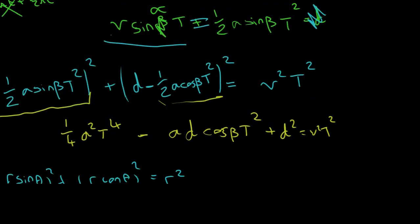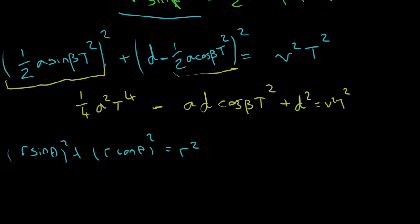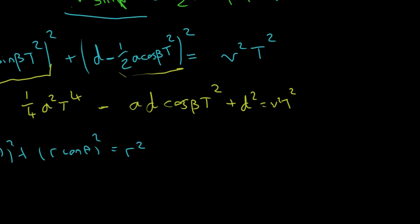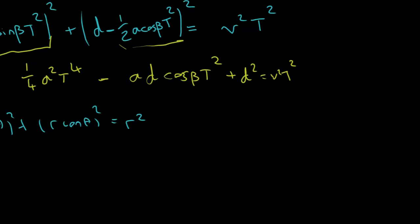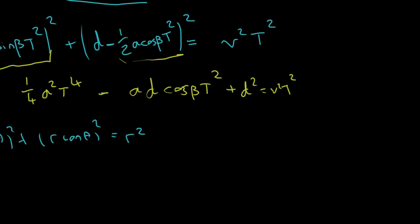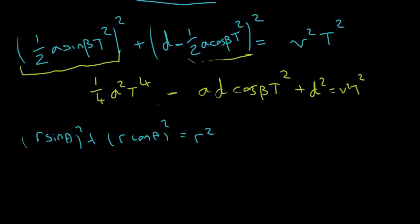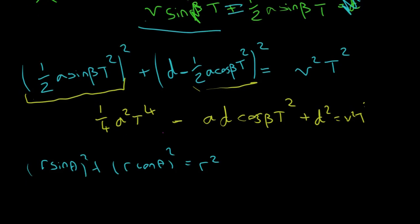Now I noticed that I have this sine beta term squared, and I'm going to have a cos beta term squared when I expand this out. And they're going to collect, give one. So that's going to give me a quarter A squared T to the four. And then I'm going to have a minus, that looks like, A D cos beta T squared. And then plus D squared equals V squared T squared. So what is this anyway? What relationship have I got? Well, it's not quite the inequality I was looking for, but it's some quadratic.